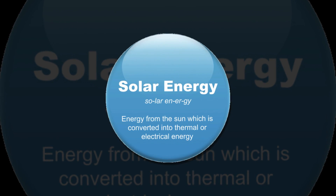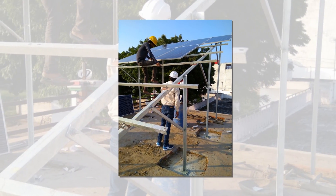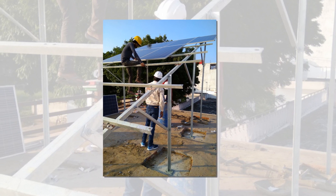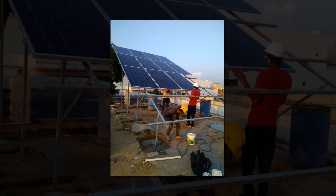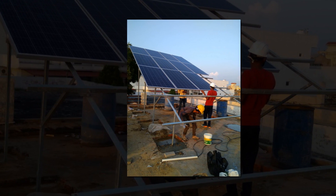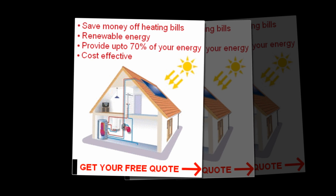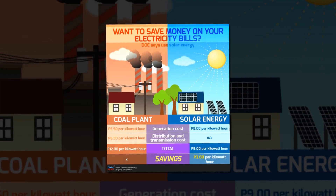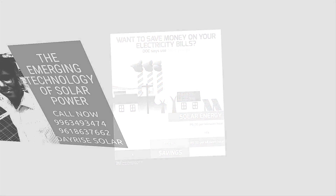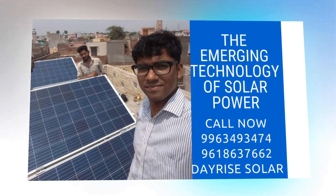A grid-connected photovoltaic power system, or grid-connected PV power system, is an electricity-generating solar PV power system that is connected to the utility grid. A grid-connected PV system consists of solar panels, string solar inverters, and grid bi-directional net meters for connection with the grid or main electricity. On the other hand, an off-grid solar power plant system is a system designed to help people's own electrical systems function without the support of remote infrastructure such as an electrical grid.